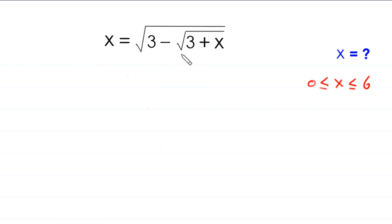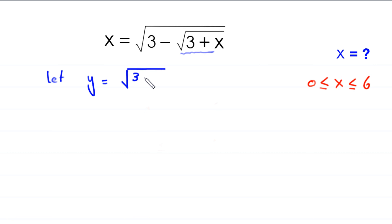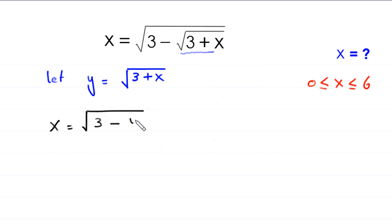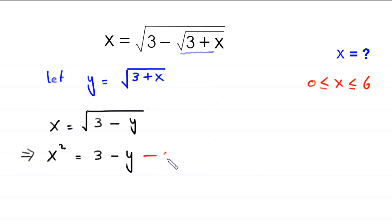Now we suppose that the expression square root of 3 plus x is equal to y. Let y equal the square root of 3 plus x, and substitute y into the equation. This becomes x equals the square root of 3 minus y. Squaring both sides gives x squared equals 3 minus y — call this equation 1.